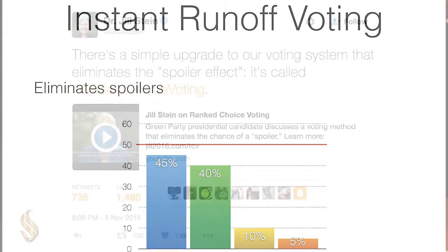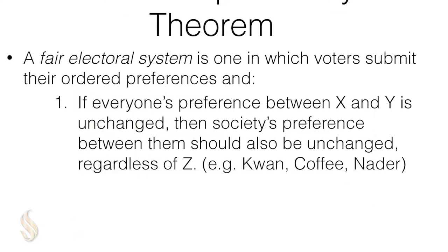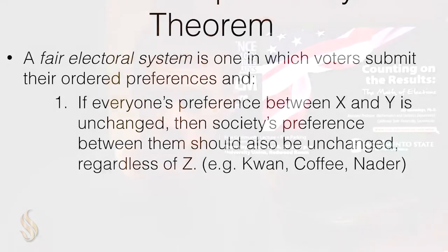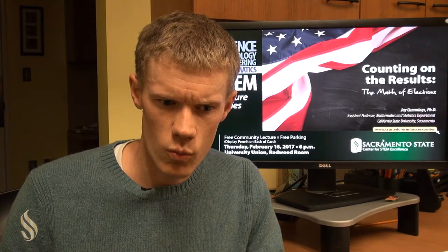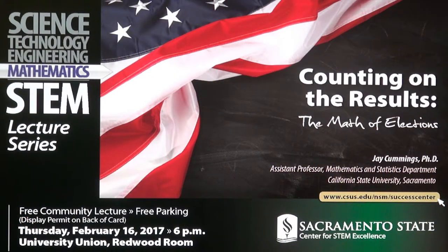Maybe you give your top choice three points, your next choice two points, one point, and zero points, and you just add up all the points. This is a little bit better because not only are you declaring who you want most, but you're also declaring your second choice. Additionally, if you really like a third party candidate, you don't feel like you're throwing away your vote because you're still able to award some points to your second choice. Suppose you really like the Libertarian or the Green Party candidate — you can still vote for them, but still declare a preference between, say, Clinton or Trump.